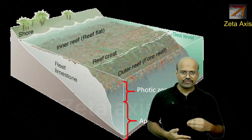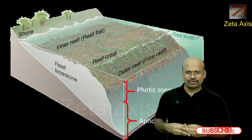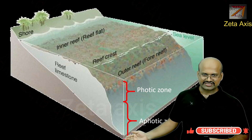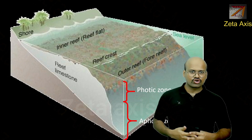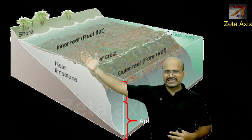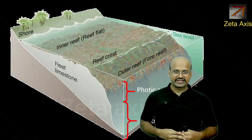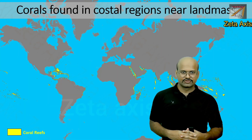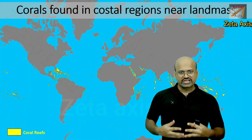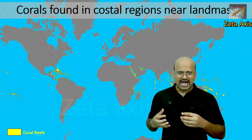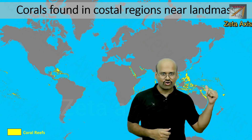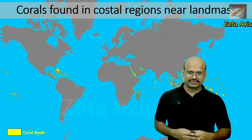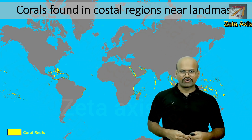Looking at the photic and aphotic zones relative to the sea floor, only the top shallow portion is the photic zone — the rest is aphotic. For corals to survive they must be in this shallow water region where enough sunlight is available for photosynthesis. That is why coral reefs around the world are formed along islands or coastal regions, growing only in shallow sea waters.